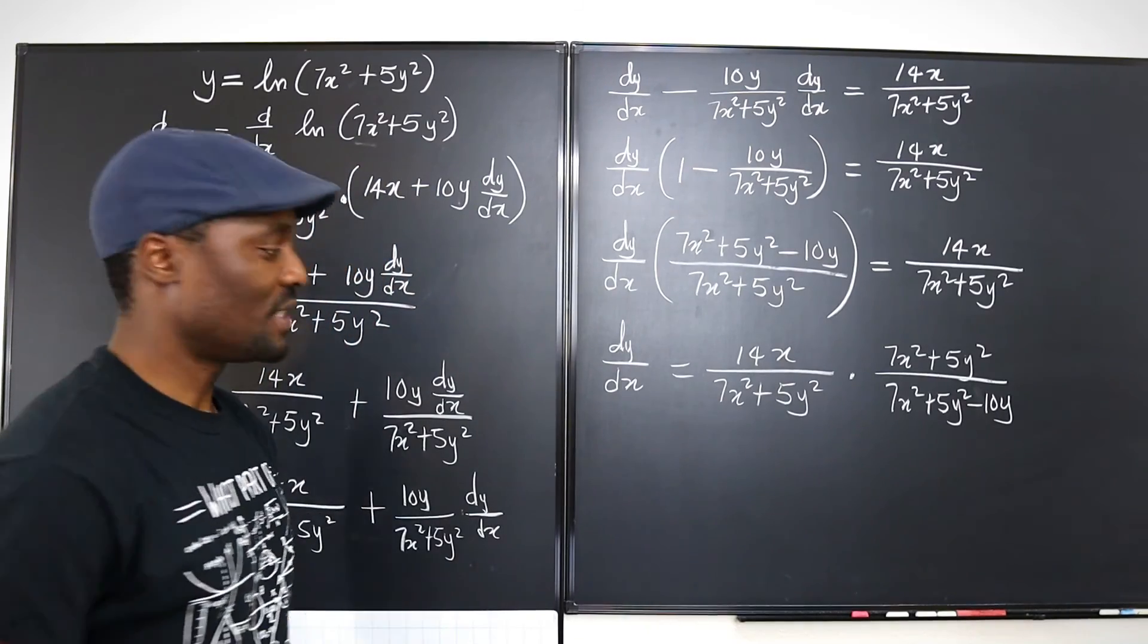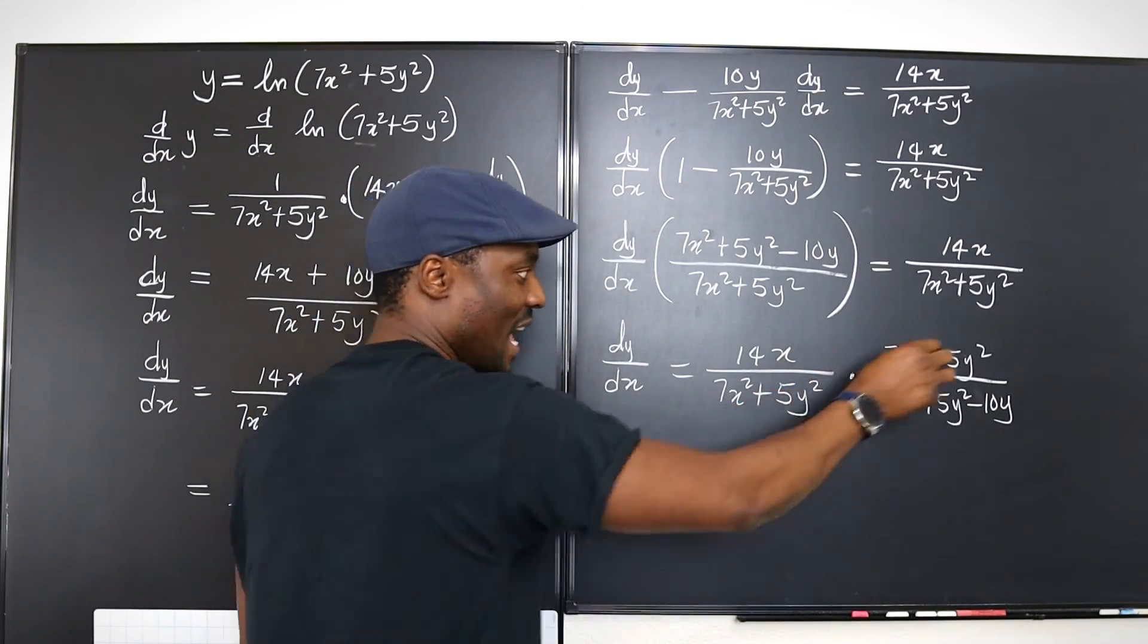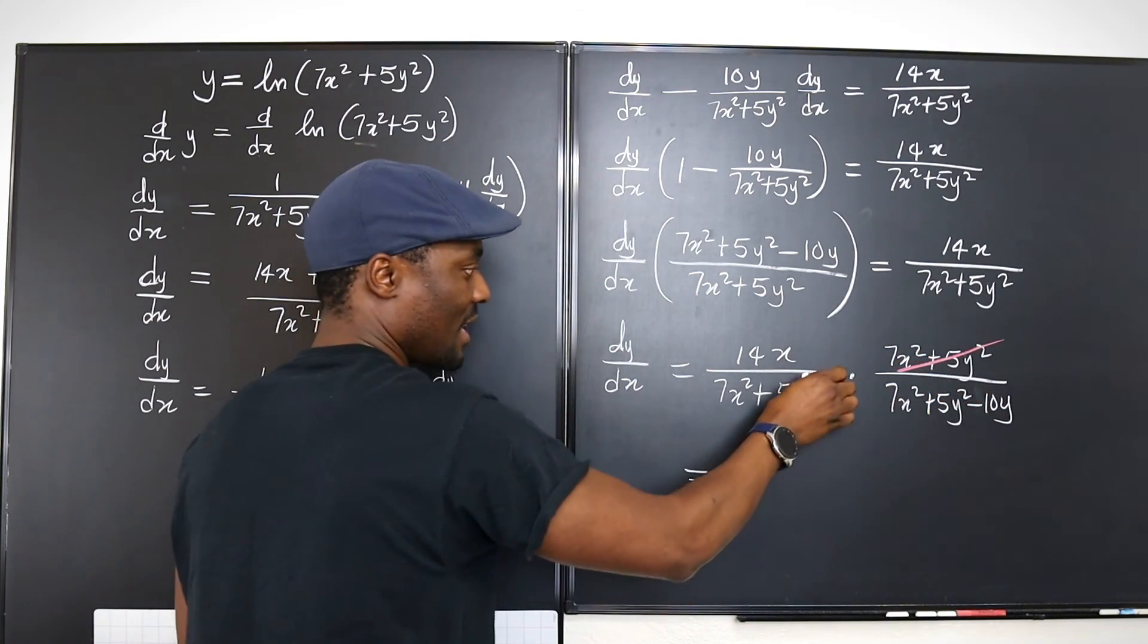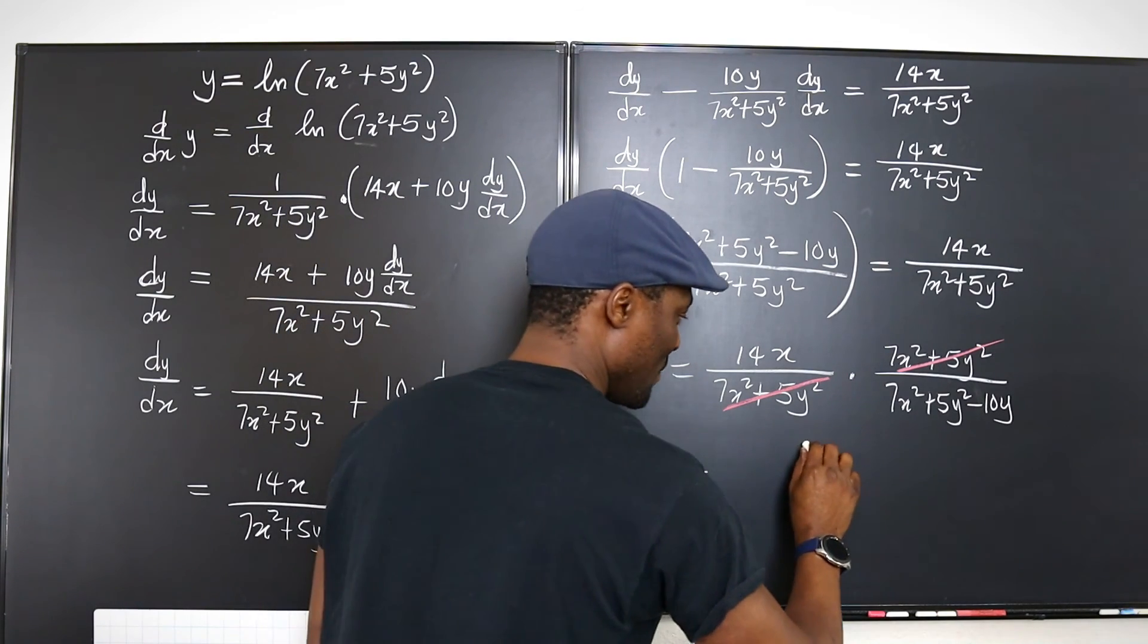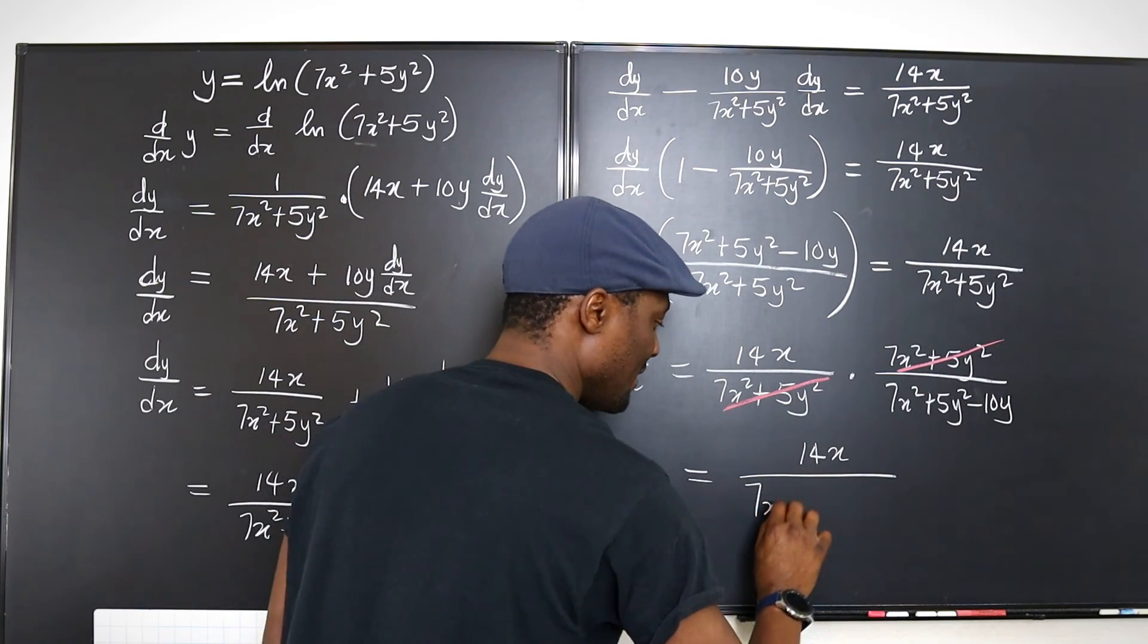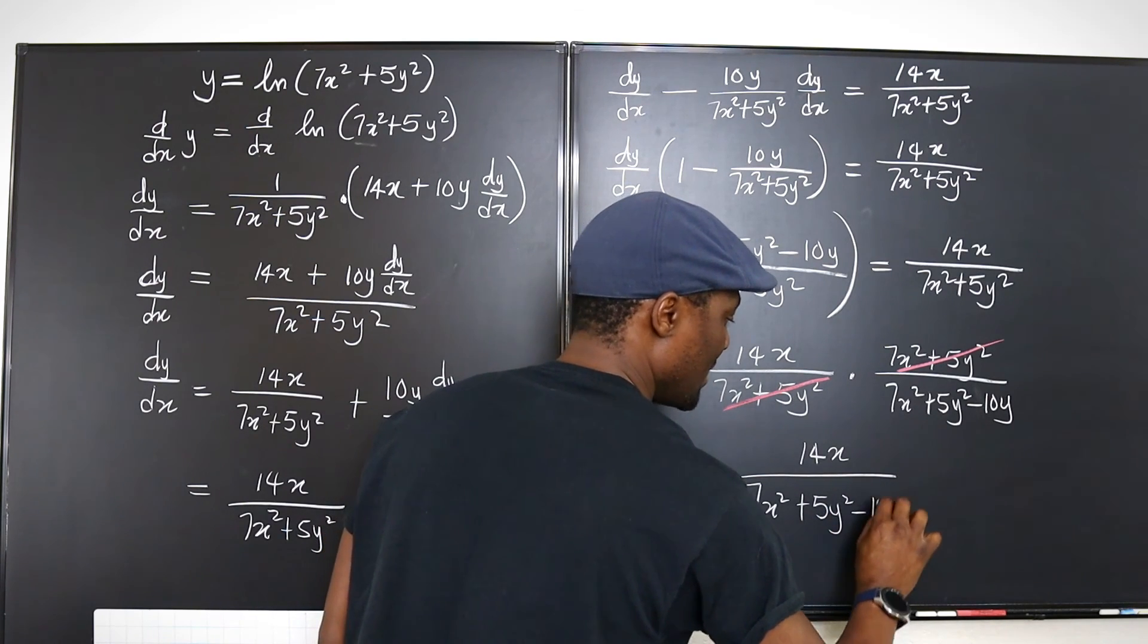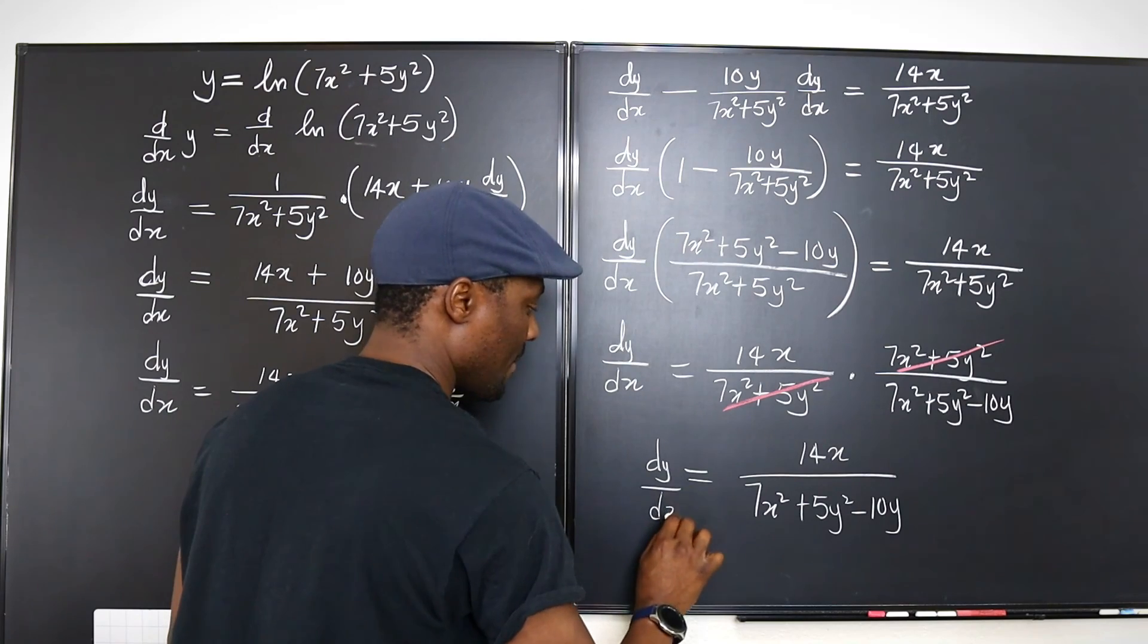Now it looks like we're done. Look at what we get. This expression cancels this expression. This cancels this. So what is left is just 14x divided by (7x² + 5y² - 10y). That's dy/dx.